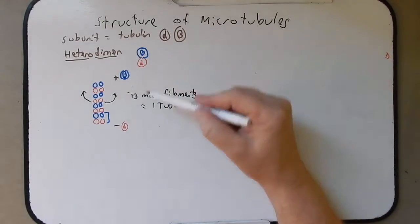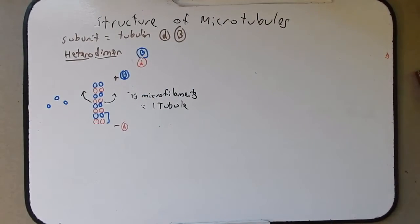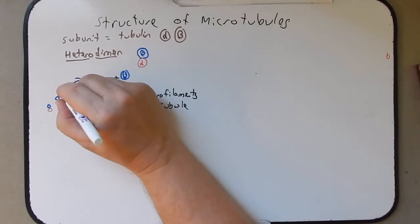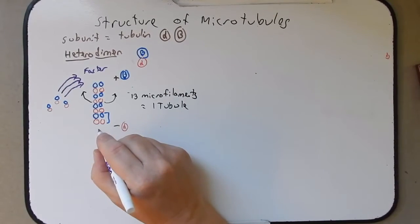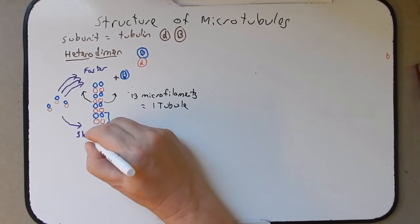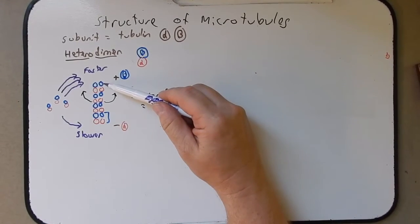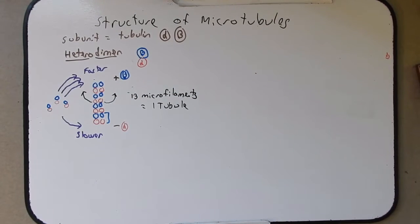These heterodimers are added to both ends from pools of heterodimers. They are added to the plus end faster — I'll draw three arrows to signify that — and also added to the negative end at a much slower rate, shown with one arrow. Overall they appear to be growing at the plus end just because the subunits are being added at a quicker rate. The plus and negative have nothing to do with charges; it's just a way to differentiate between the two ends.